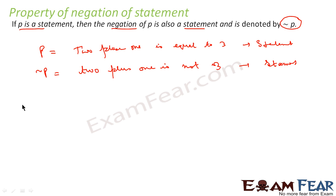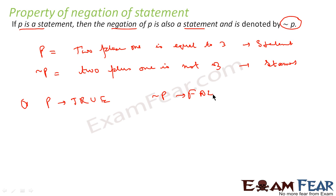The second property is: if p is true, then the negation of p is false. Similarly, if p is false, then the negation of p is true.